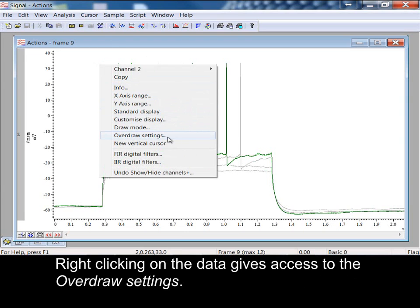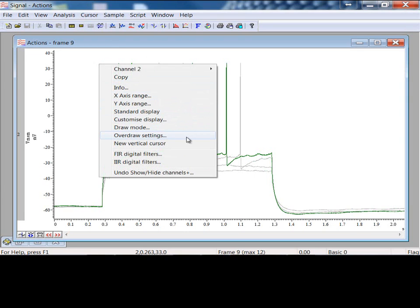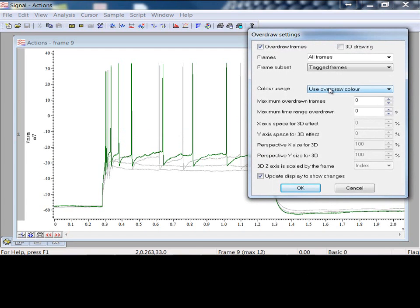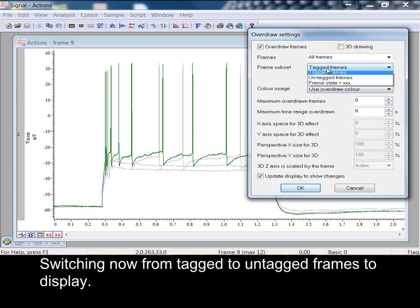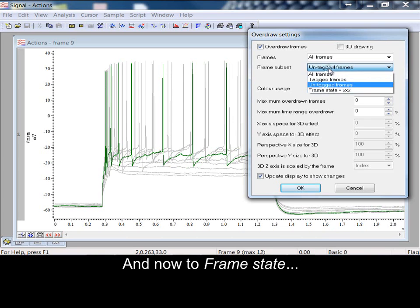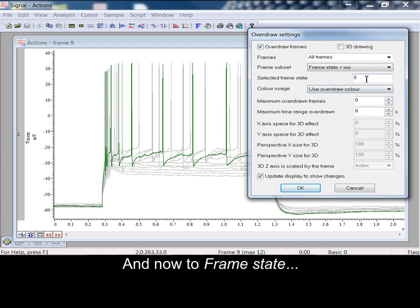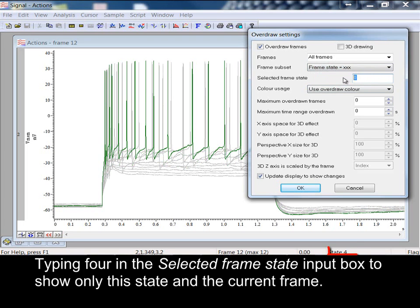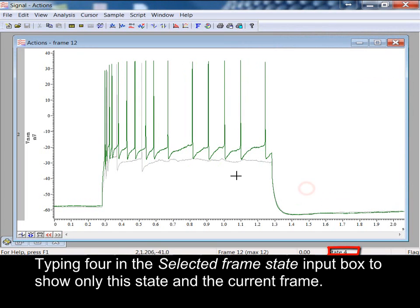Right-clicking on the data gives access to the overdraw settings. Switching now from tagged to untagged frames to display, and now to frame state. Type 4 in the selected frame state input box, to show only this state and the current frame.